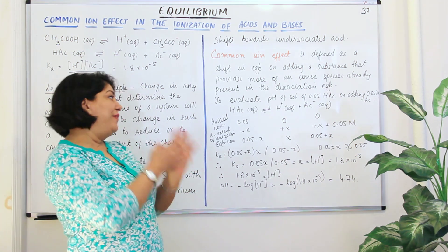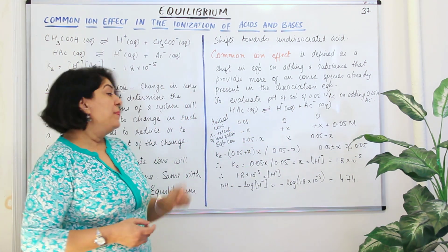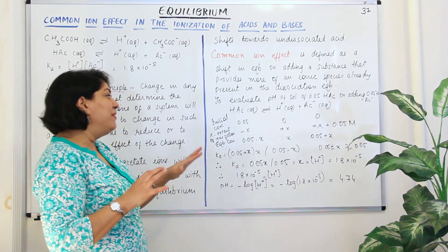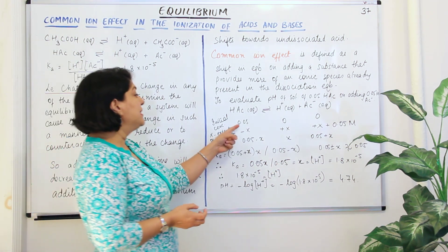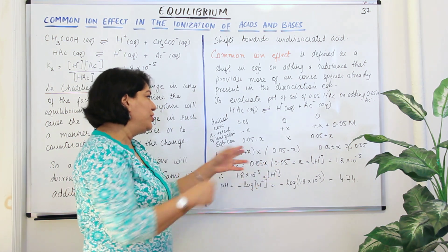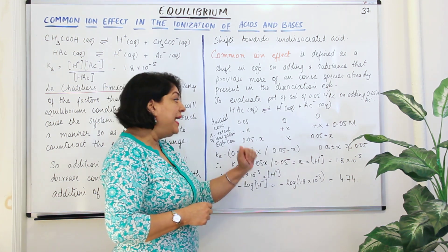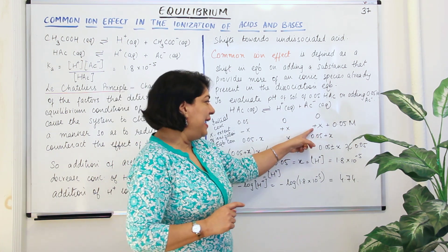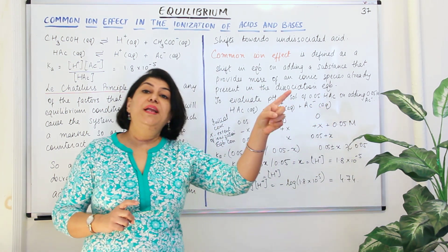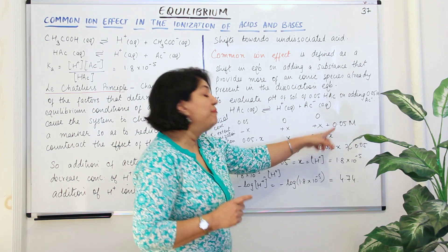Let x be the extent of ionization. If x moles of HAC dissociated, then according to the molar equation, x moles of H positive would be formed and x moles of AC negative would be formed, while x moles has been removed from HAC. At equilibrium, the concentration of HAC would be 0.05 minus x. The concentration of H positive would be x. And the concentration of acetate ion would be x from this reaction plus 0.05 moles of the common ion that was added.